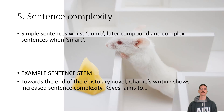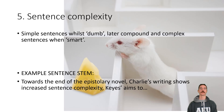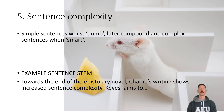Fifth is sentence complexity. There are three basic forms of sentences: simple, compound, and complex. Simple is one concept, compound is two, and complex is three or more. So Charlie uses simple sentences while he's less intelligent, and later compound and complex sentences — multiple clauses, multiple ideas — when he's smart. For example: 'Towards the end of the epistolary novel, Charlie's writing shows increased sentence complexity. Keyes aims to...'